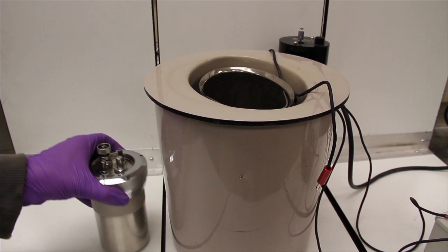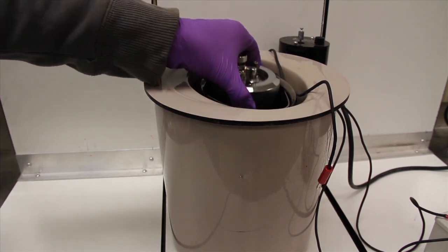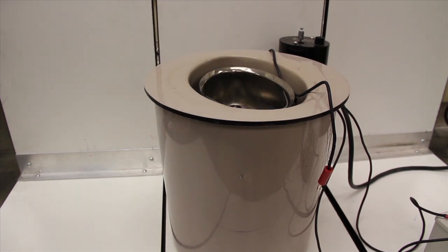After the bomb has been purged twice and pressurized with 25 atmospheres of oxygen, load the bomb into the calorimeter and add 2 liters of water from a volumetric flask.